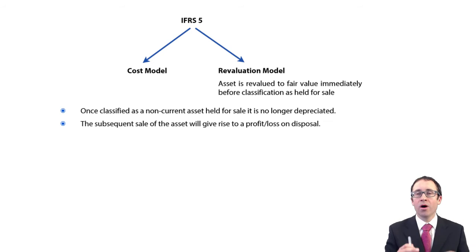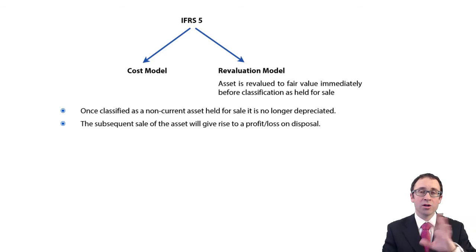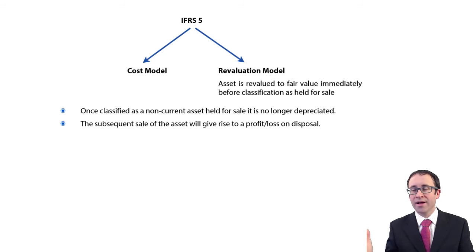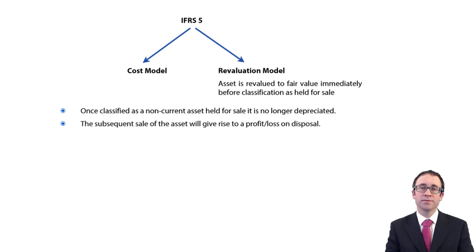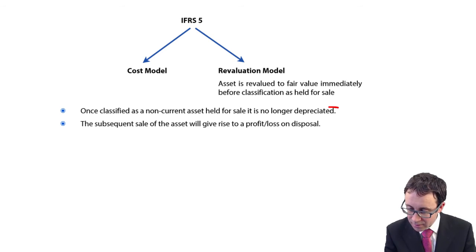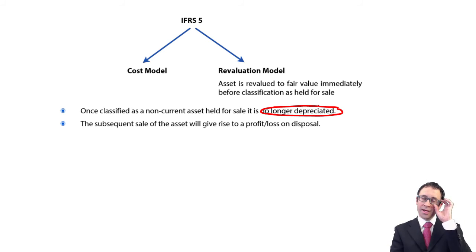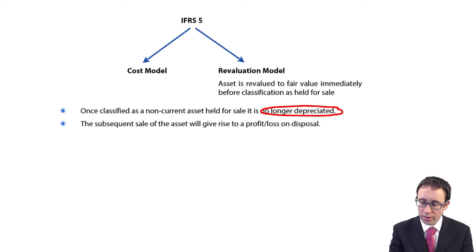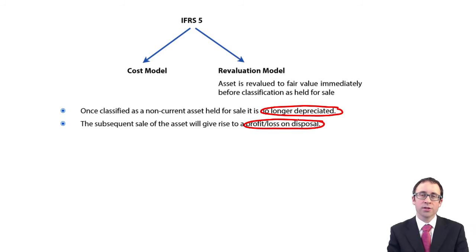Your item of property, plant and equipment will be held at either the cost model or the revaluation model. Under the cost model, you just need to make sure you have depreciated it up to the date of the transfer — you might have transferred it halfway through the year, so depreciate it for six months. Once it is classified as held for sale, it is no longer depreciated. Once it has been classified as held for sale and then sold, you will get a profit or loss on disposal.